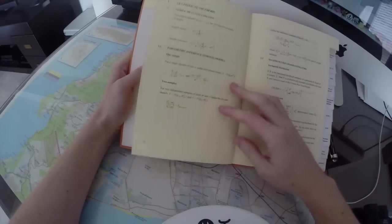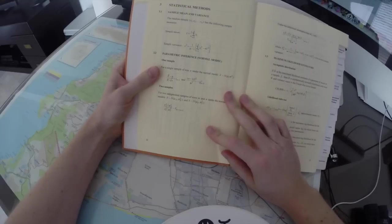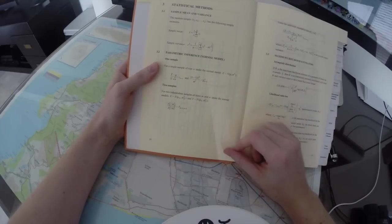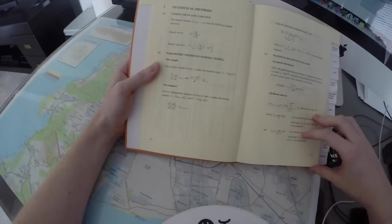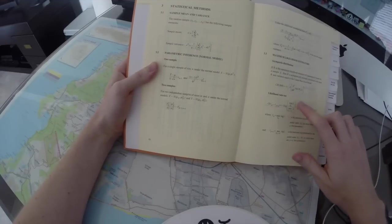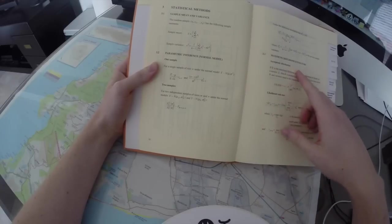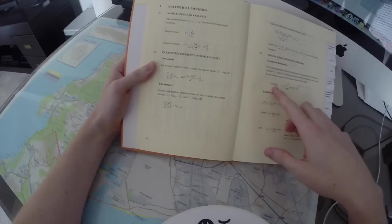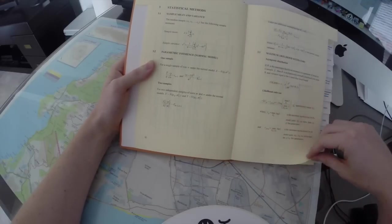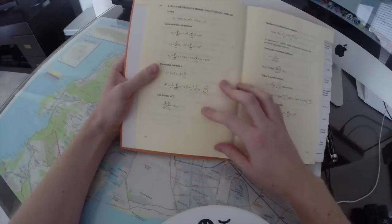Now we go into statistical methods, sample mean and variance, parametric inference, maximum likelihood estimators, asymptotic distributions, that's Cramér lower bound, likelihood ratio test. The theory behind that's quite insane.